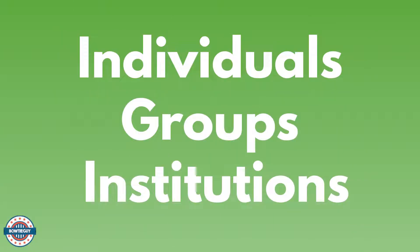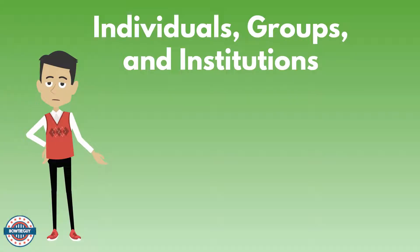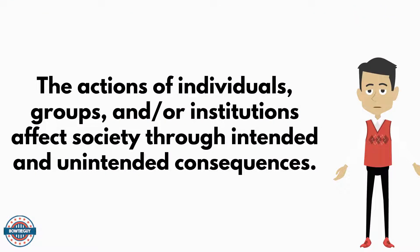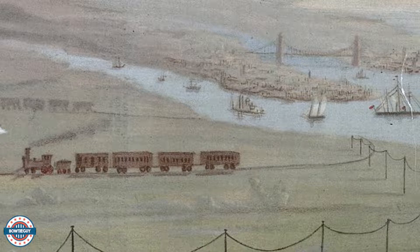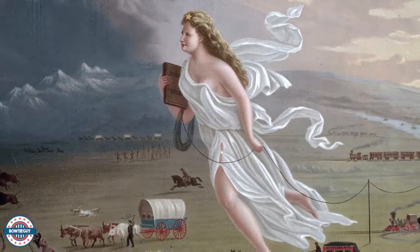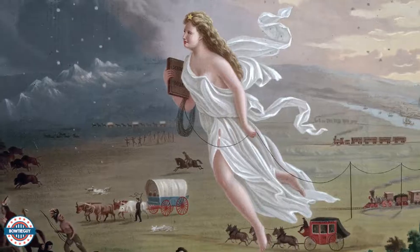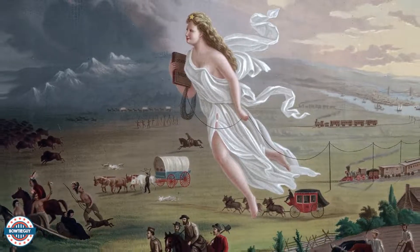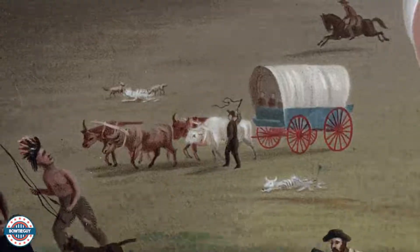Another connecting theme includes individuals, groups, and institutions. The actions of individuals, groups, and/or institutions affect or change society through intended and/or unintended consequences. An example includes manifest destiny. The painting called American Progress is a symbol of manifest destiny — but what you don't see are the Native Americans being pushed west. That's an unintended consequence.